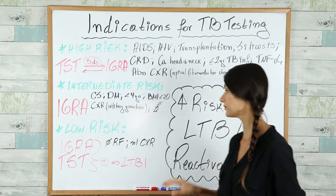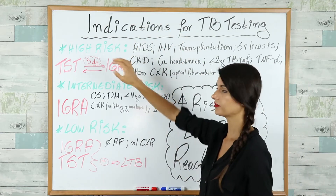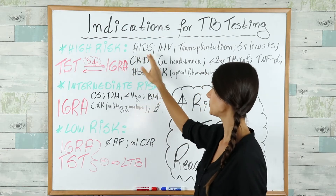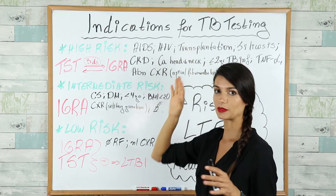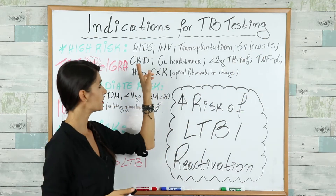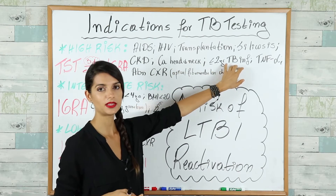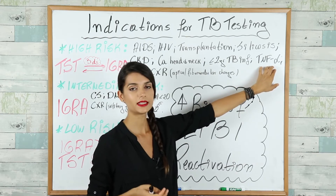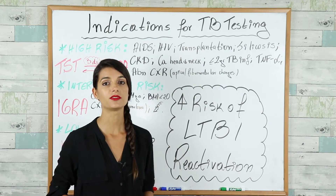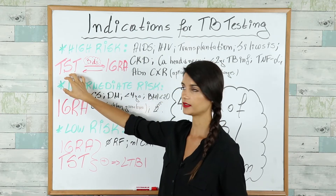Patients at increased risk of latent TB reactivation are divided into three groups: high, intermediate, and low risk. High-risk patients include those who are HIV positive, have undergone transplantation on immunosuppressant therapy, have silicosis, CKD requiring hemodialysis, carcinoma of the head and neck, TB infection less than two years ago, are on TNF-alpha inhibitors, or have abnormal chest X-ray with apical fibronodular changes suggestive of healed TB. In these patients, either TST or IGRA may be used.